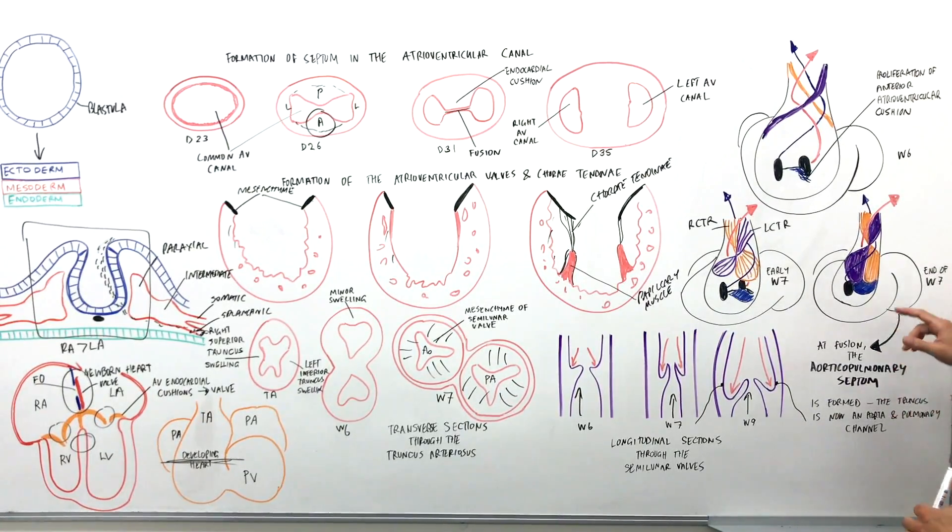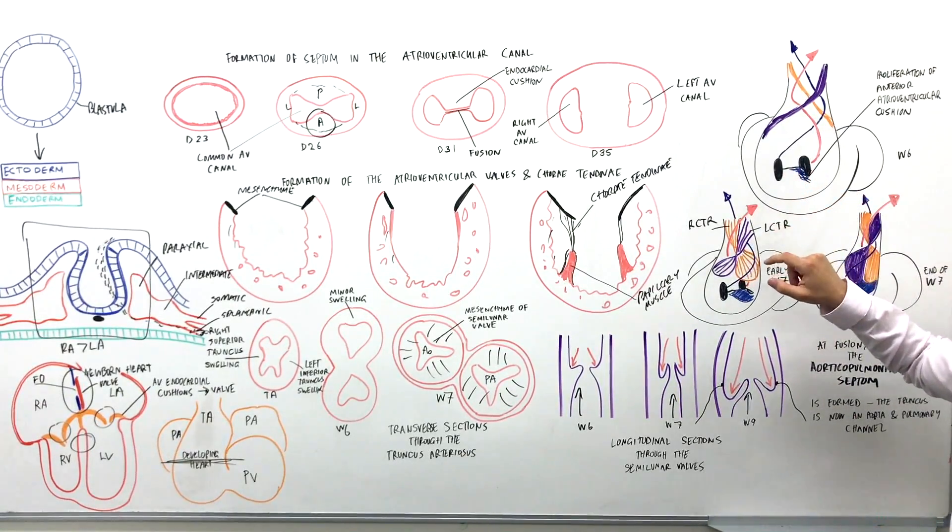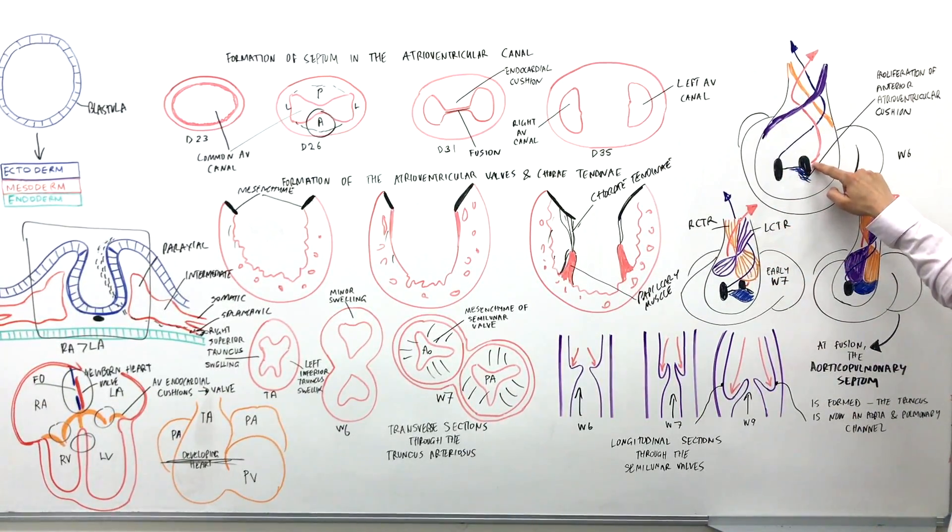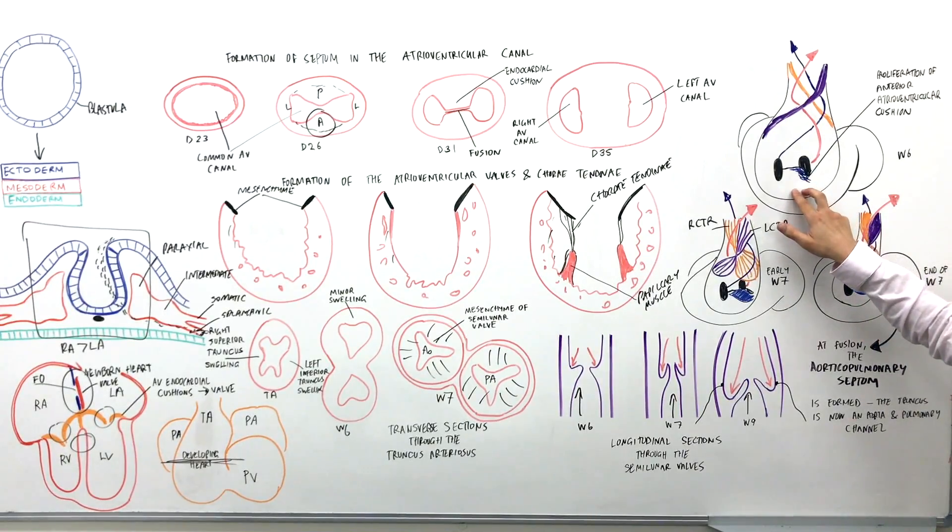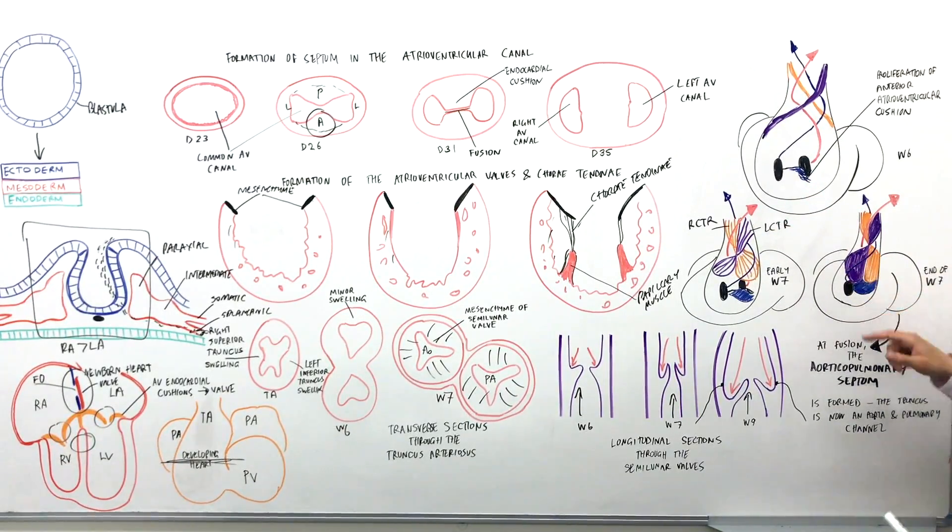So we have the venous flow coming in from this side, and the aortic flow will come from behind it from the left side. So to go over that again, initially it's a free-for-all. We have arterial blood and venous blood being mixed and sent through in the heart. At week six, by the end of week seven, we'll have an occlusion between the left and the right canals.